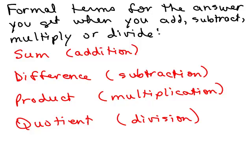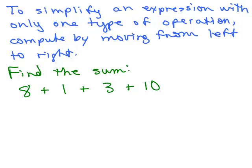All right, we're going to get back to how do we simplify expressions when we've got either addition, multiplication, subtraction, or division. And before we go to that, I want to talk about the formal terms for the answer when you add, subtract, multiply, or divide. So the sum refers to adding numbers, difference refers to subtraction, product refers to multiplication, and quotient refers to division. So I'm going to use these terms now to show how to simplify expressions. To simplify an expression with only one type of operation, you're going to compute by moving from left to right.